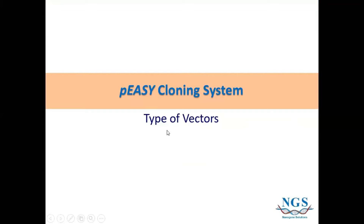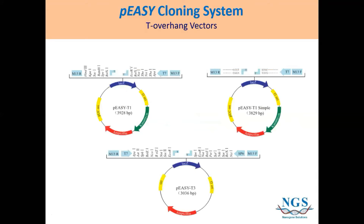Now I will introduce the types of vectors in the PEZ cloning system. The first type is the T-overhang vector — this is TA cloning, known as the sticky end. We have three types of T-overhang vectors: PEZ T1, PEZ T1 Simple, and PEZ T3. The difference between them is the RE sites — they have different RE sites.